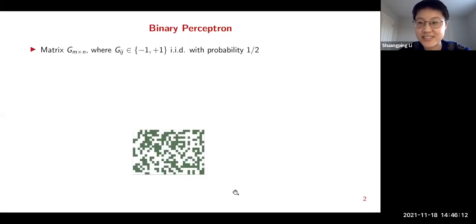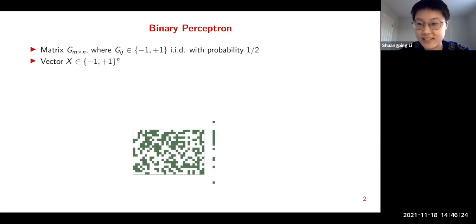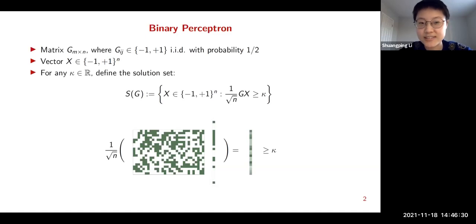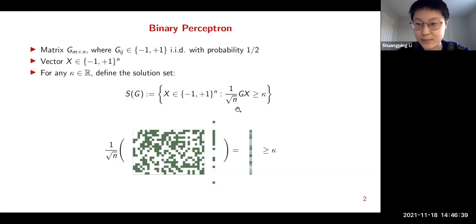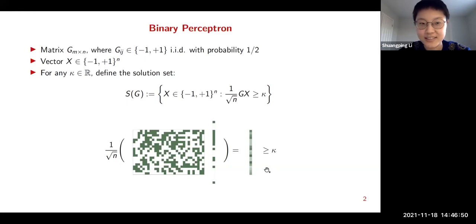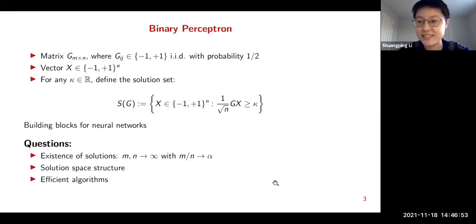What is binary perceptron? We start with a matrix G of size m by n, where each entry equals plus or minus one with probability one half, i.i.d. We look for a vector x of length n where each entry also equals plus or minus one. For any real kappa, we consider the solution set: all x in {+1,-1}^n such that G times x, normalized by 1/sqrt(n), is entry-wise greater than or equal to kappa.